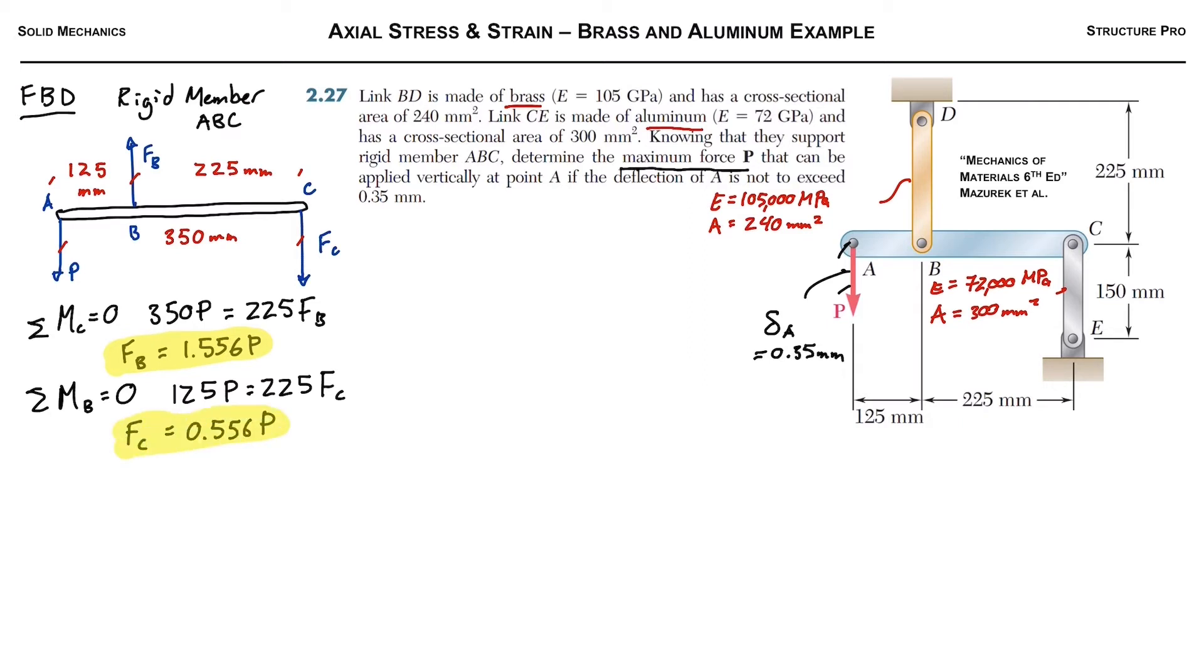Next, we got to figure out our deformations. So the deformation at B is equal to the total elongation of this brass link. We know that the deformation equation, axial deformation, is FL over AE. So we'll use FB, the length, the area, and E brass to figure that out. So we'll plug everything in here.